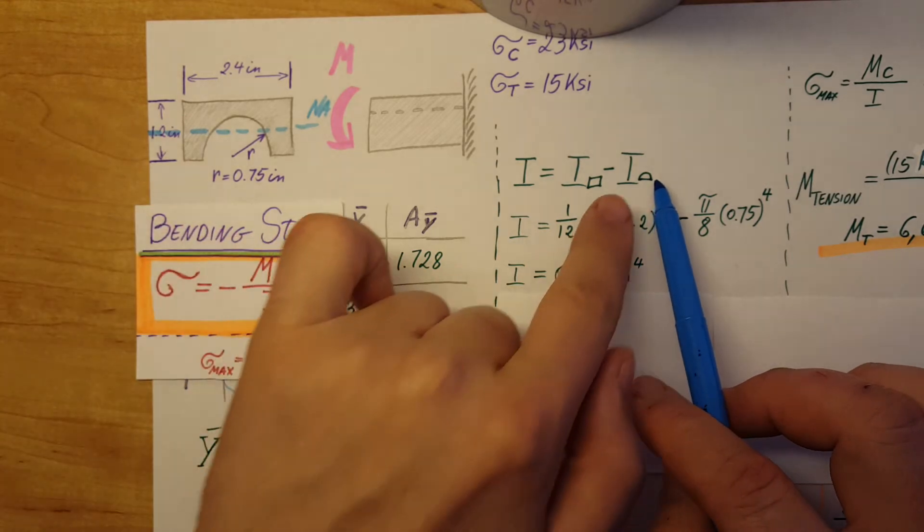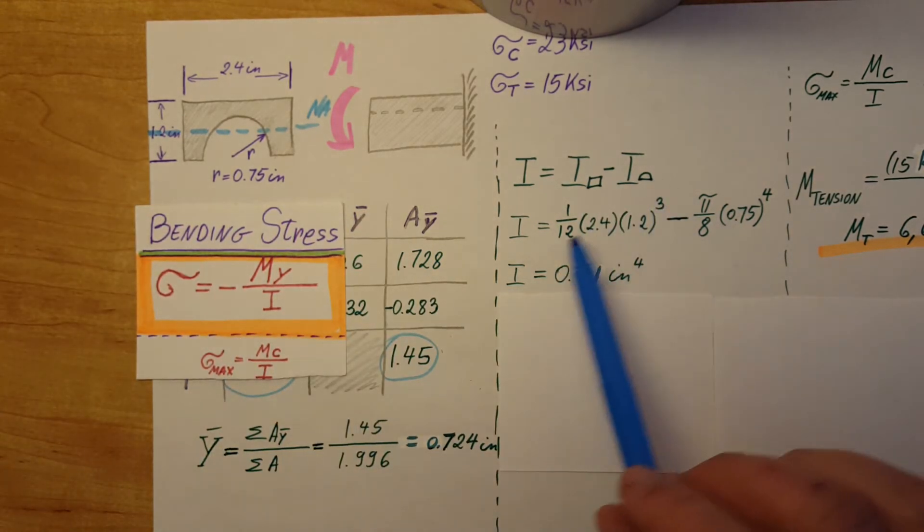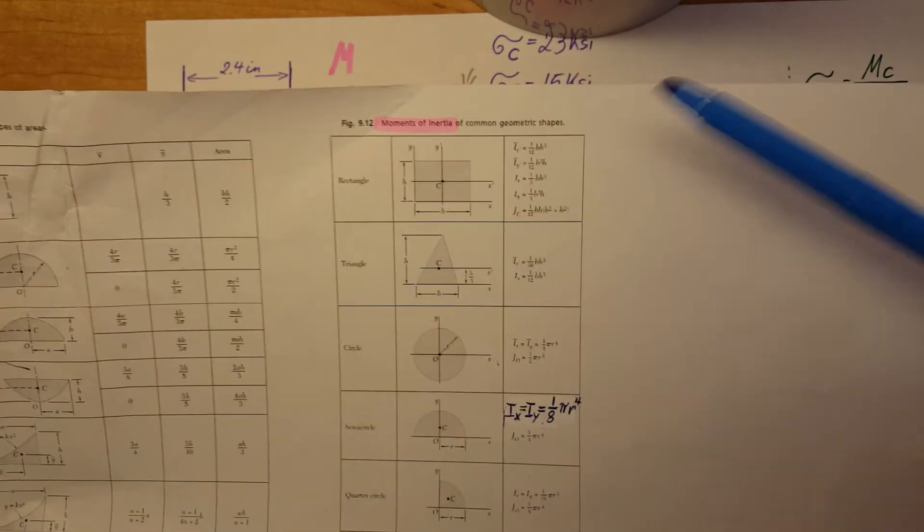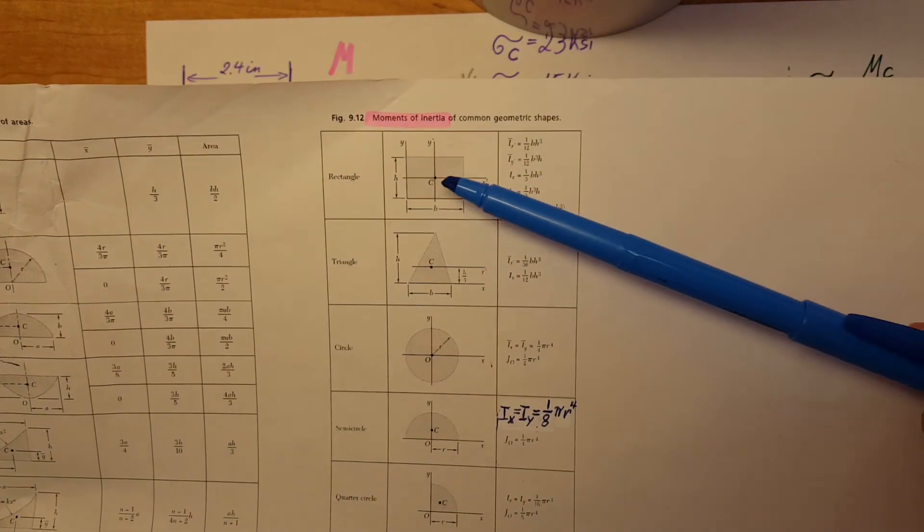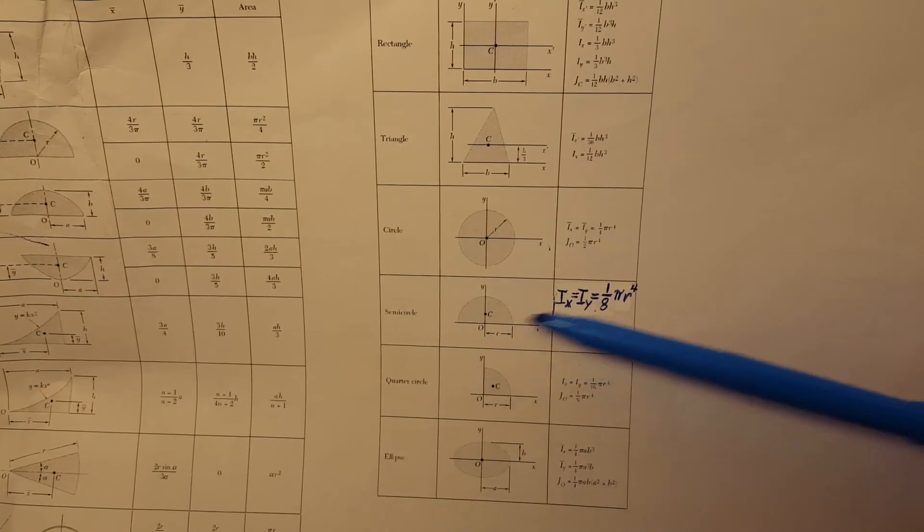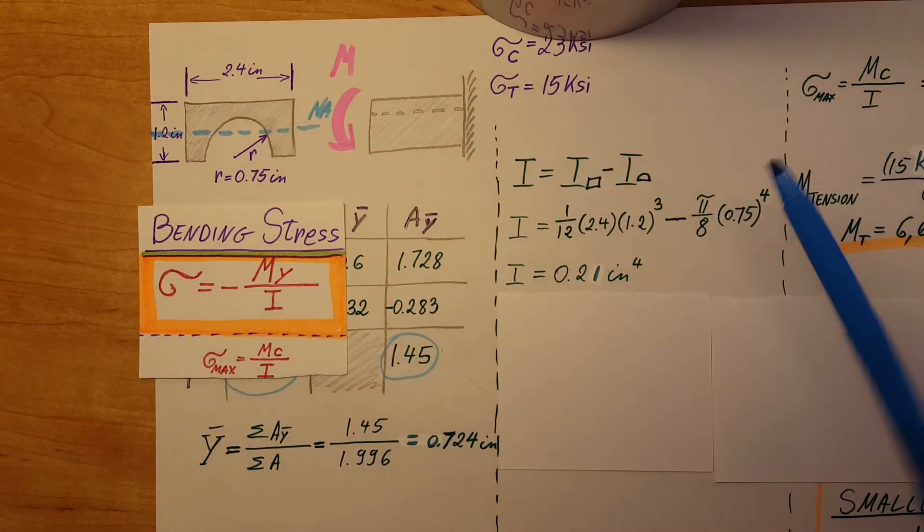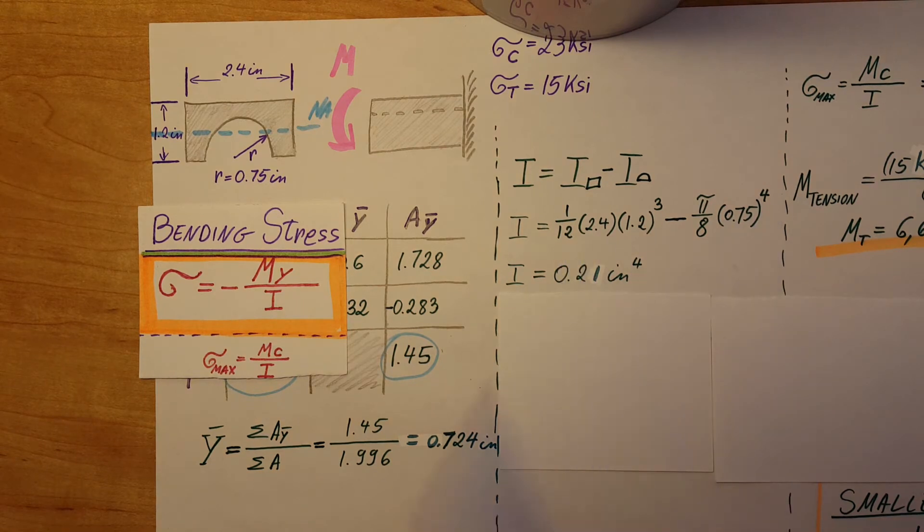Here are the plugged in formulas from the table for the rectangle and for the half circle down here. For the moment of inertia, simply plug it in and find the moment of inertia.